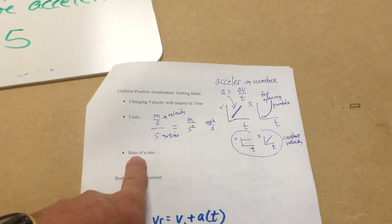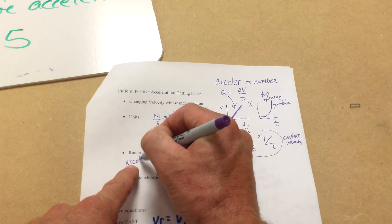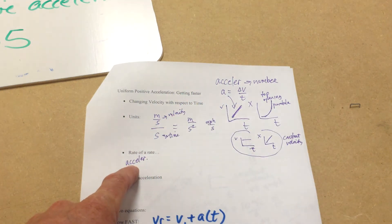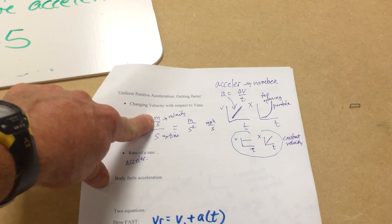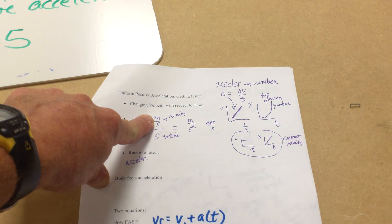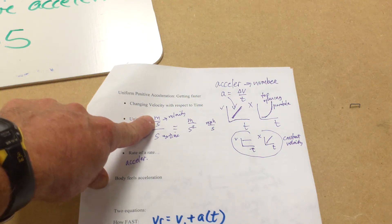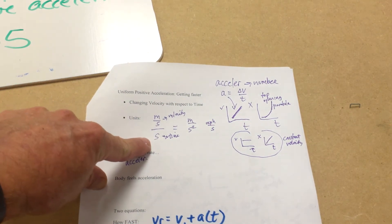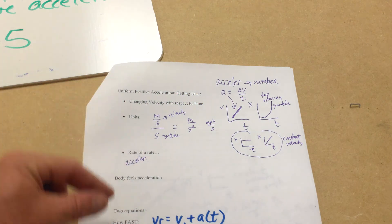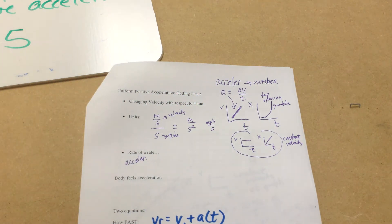You might see this term here, this phrase, rate of a rate. Acceleration really is a rate of a rate, because what we have is a velocity, which is a rate. That's a rate that something moves, or displacement. And so the rate of velocity then would be acceleration, a rate of a rate. Velocity is a rate, and then acceleration is the rate of that rate.